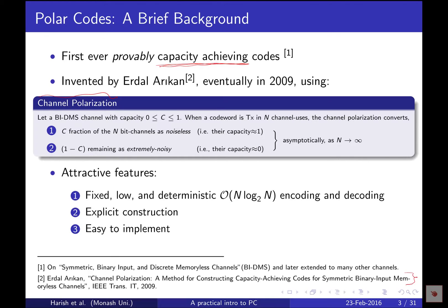Channel polarization — the basic technique used in polar codes — is about polarizing the channel into two extremes in terms of quality. We are essentially making channels either completely noisy or completely noiseless. We use n copies of the channel (n channel uses), and process them so that exactly c fraction of the bit channels — where c represents the Shannon capacity — become completely noiseless.